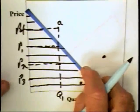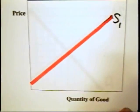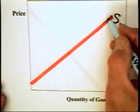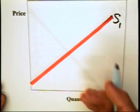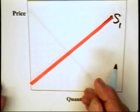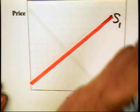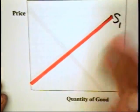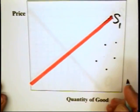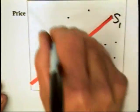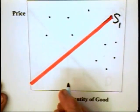And the same goes for suppliers. The supply curve is a boundary between what is acceptable to suppliers and what is unacceptable. These are the unacceptable combinations down through here. These are the acceptable combinations.